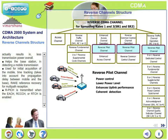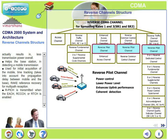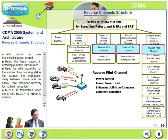The pilot channel is used for initial acquisition of the mobile, time tracking to account for propagation delay between the mobile and the base, and rake receiver reference recovery for multipath reception. The reverse pilot channel is transmitted when the enhanced access channel, reverse common control channel, or reverse traffic channel is enabled.